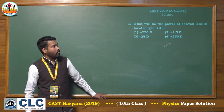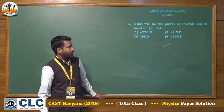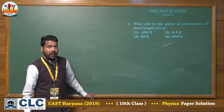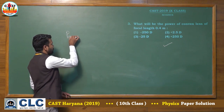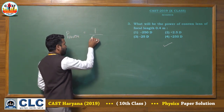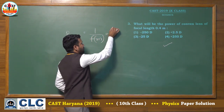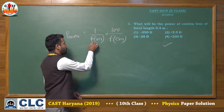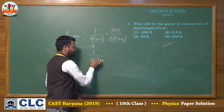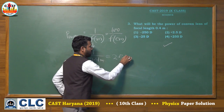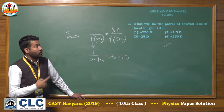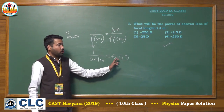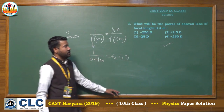Third question: what will be the power of a convex lens of focal length 0.4 meter? Power of a lens = 1 / focal length in meters, or 100 / f in centimeters. Since focal length is given in meters, using the first formula: P = 1/0.4 = 2.5 diopters, positive because it is a convex lens with positive focal length. The right answer is the second option.